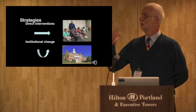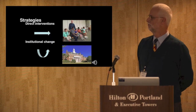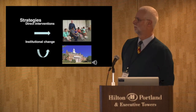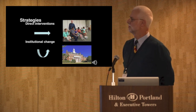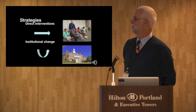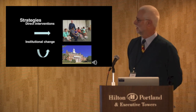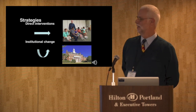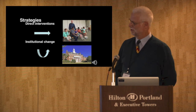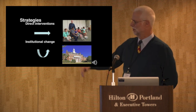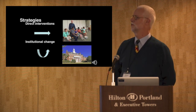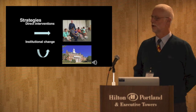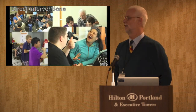So we have two strategies. The first is direct interventions — here you can see me with a group of blind students at the National Federation of the Blind, in computer science and cognitive activities. The second is institutional change, which involves work at the university level. These are our two main strategies.